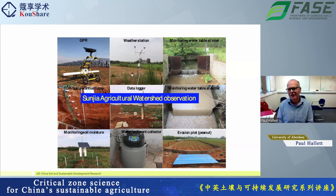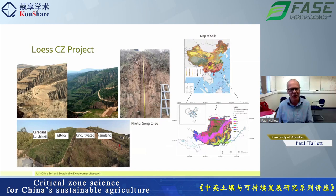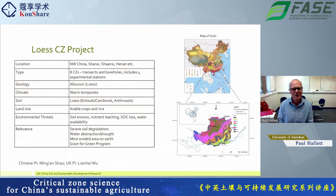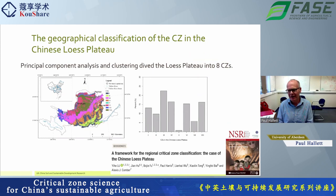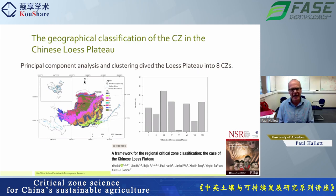Up in northwest China is the Loess critical zone project. These are soils which form from windblown aeolian material — quite fragile and very susceptible to erosion. It's where the Grain for Green program is being put in place, with huge areas of land restoration. The area suffers from high soil erosion, nutrient leaching, and water availability challenges. The team took a different approach, looking at the whole Loess Plateau region. Using principal component analysis of geographic and land use aspects, they identified eight different areas that defined their critical zones, obtaining a broad regional understanding of processes.